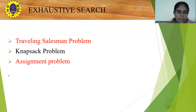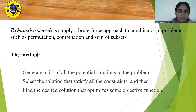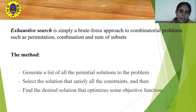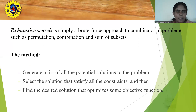Under brute force we are going to see about the knapsack problem today. The knapsack problem falls under the exhaustive search category. Exhaustive search is a kind of brute force approach which is used to solve problems involving permutation, combination, and subsets. In the knapsack problem you are going to find the subset of items that maximizes the profit, and since it involves subsets it falls under the exhaustive search category.